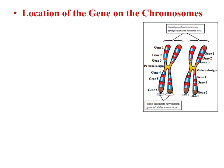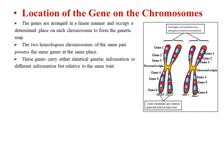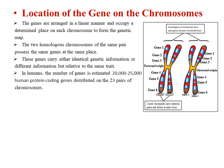In this chromosome pair we observe six genes; each gene codes for a certain character. The two homologous chromosomes of the same pair possess the same genes at the same level or place. These genes carry either identical genetic information or different information, but relative to the same trait. In humans, the number of genes is estimated at 20,000 to 25,000 human protein-coding genes distributed on the 23 pairs of chromosomes.